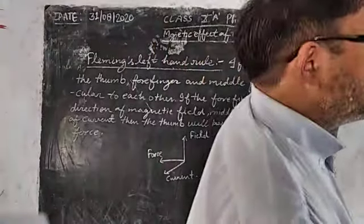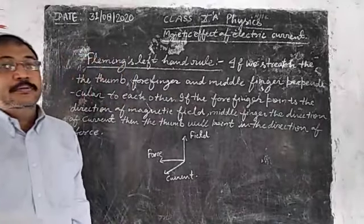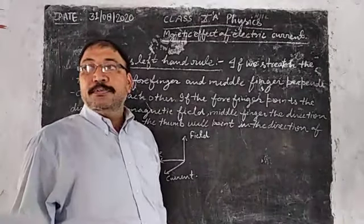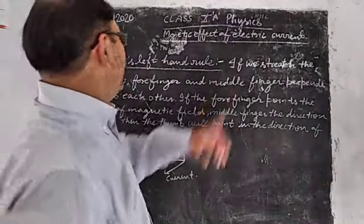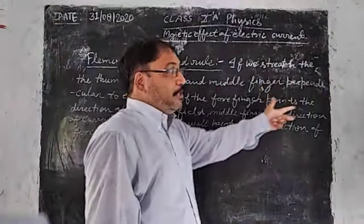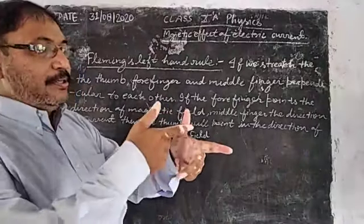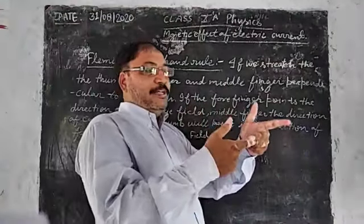Students, we are going to study Fleming's left-hand rule. So what is the left-hand rule? We stretch the thumb, forefinger, and middle finger perpendicular to each other. This is forefinger, thumb, middle finger, each are perpendicular to each other.